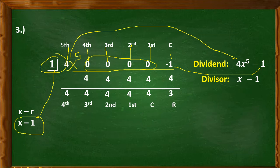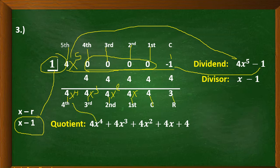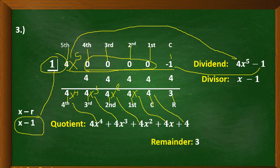For our quotient, we look at the bottom row. Starting with the constant term, then the first degree term with variable x, the second degree term for x squared, the third degree term for 4x cubed, and lastly the fourth degree term for x to the power of 4. So our quotient is 4x to the power of 4 plus 4x cubed plus 4x squared plus 4x plus 4. And our remainder is 3.